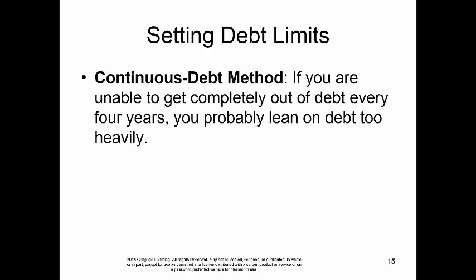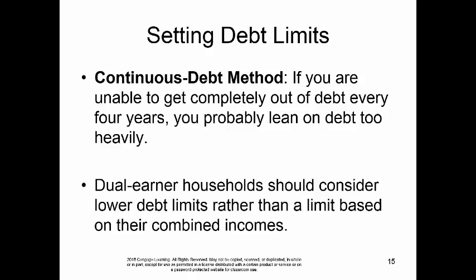Another method of setting debt limits is the continuous debt method. If you were unable to get completely out of debt every four years, you'd probably be leaning on debt too heavily. Also, dual earner households should consider lower debt limits rather than limits based on their combined income, because of the likelihood that one of the wage earners might lose their job or become less than fully employed.